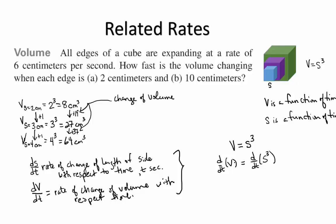The derivative of volume with respect to time is just dv dt. But what do we have to do with this expression on the right? Power rule. That's right. So this is going to be three times s squared. But since the s and the t are not the same variable, we have to do what? The chain rule, right? ds dt.